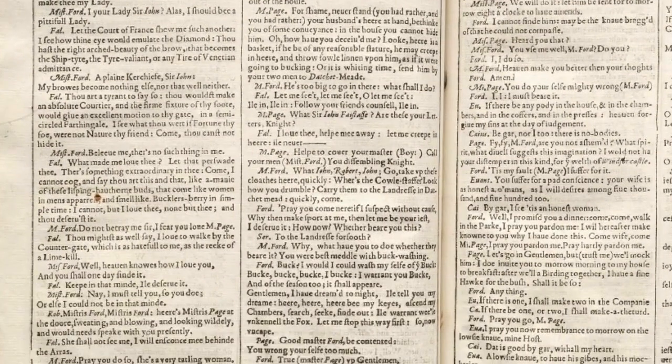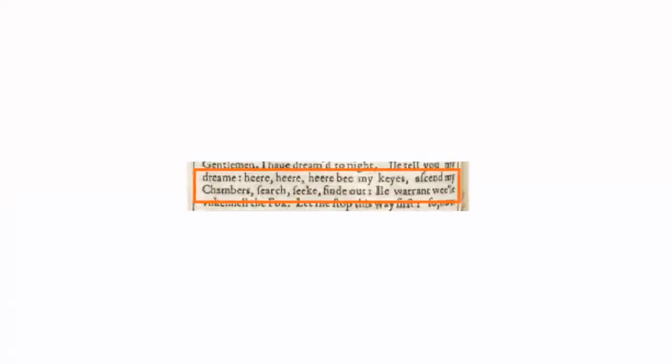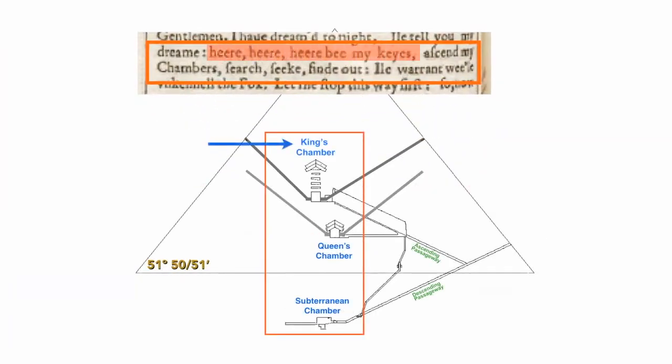What does he say down at the bottom of that page? Here, here, here be my keys. Ascend my chambers. These are called the ascending passageways, and they reach the king's chamber, queen's chamber, subterranean chamber in the Great Pyramid.